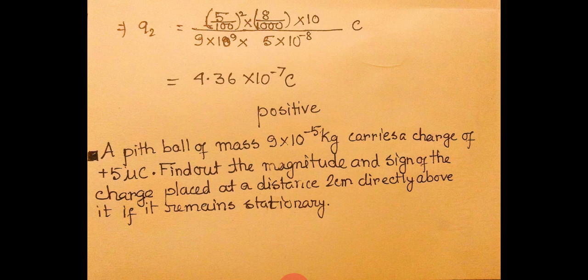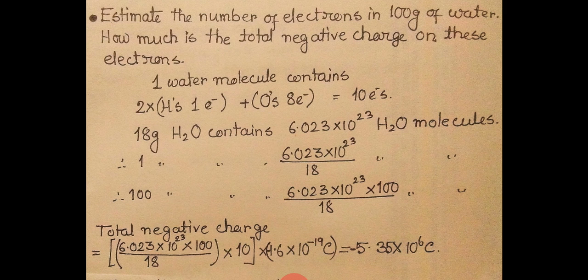Another problem for you: A pith ball of mass 9 × 10^-5 kg carries a charge of 5 microcoulombs. Find the magnitude and sign of the charge placed 2 cm directly above it so that it remains stationary. This is the same type of problem and is left for you to solve.